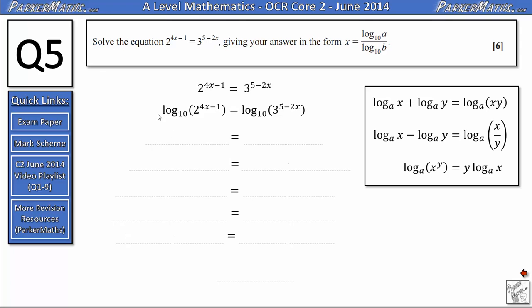So on the left hand side, we're going to get 4x minus 1 log 10 of 2. Notice here how I've used brackets for the 4x minus 1. It's because I've got to multiply all of the 4x minus 1 by the log 2. The most common mistake here that people make with these kind of questions is to not use these brackets and only end up with 4x as a term and 1 log 2.